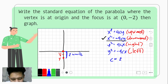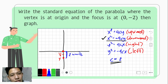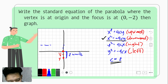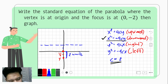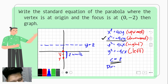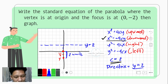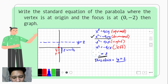If the value of C is 2, then the directrix would also be 2 units away from the vertex. Since the focus is below, the directrix should be above the vertex — that is 1, 2 units up. So the directrix lies here, and the equation of the directrix would be y equals positive 2.